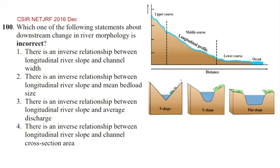Hello everyone, this is one of the interesting questions that came in CSIR NET JRF. Which one of the following statements about downstream change in river morphology is incorrect?